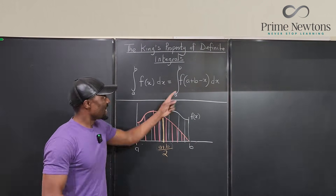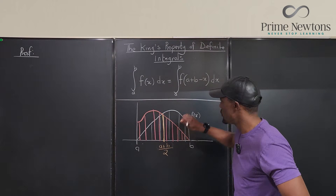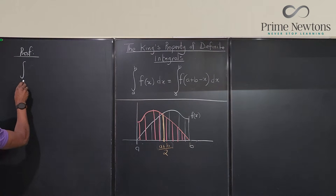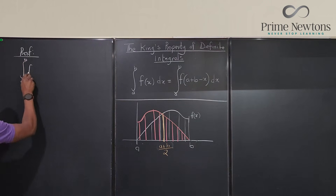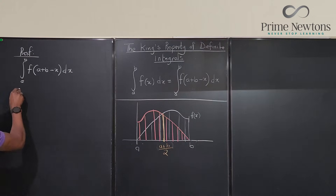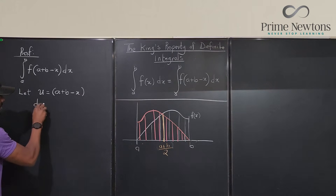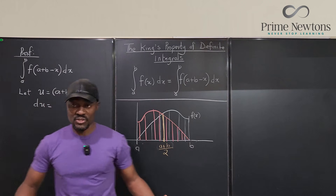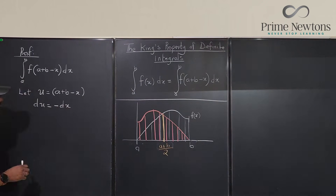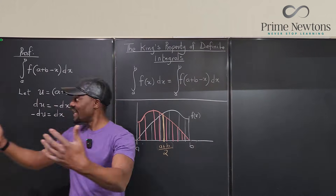Now we're going to show analytically that this expression is exactly this other expression. It's super easy — we just need to do a u-substitution. The integral from a to b of f(a + b − x) dx: we let u = a + b − x, so du equals the derivative of that, which gives us negative dx. Therefore dx equals negative du.